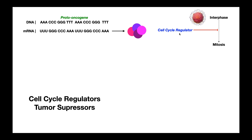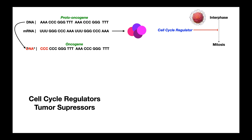Some of these regulators may function at the checkpoint between G1 and S, and some may function between S and G2. So that begs the question: what if you had a mutant cell cycle regulator? To understand that, let's actually mutate the DNA.